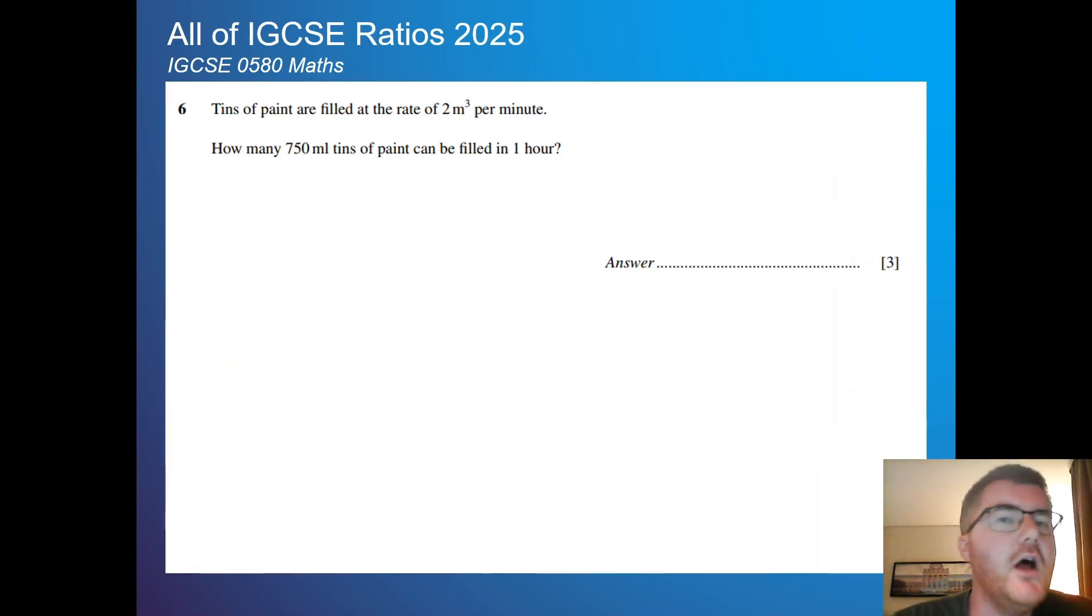Question 6. A little bit of a curveball here. It's kind of under ratio and proportion, but it's slightly different. Some conversions in there as well. So tins of paint are filled at the rate of two cubic meters per minute. How many 750 milliliter tins of paint can be filled in one hour? So my first calculation here is if I have two cubic meters per minute, then how many do we have per hour? Well, we times by 60. So 60 times 2 is going to be 120 cubic meters per hour.